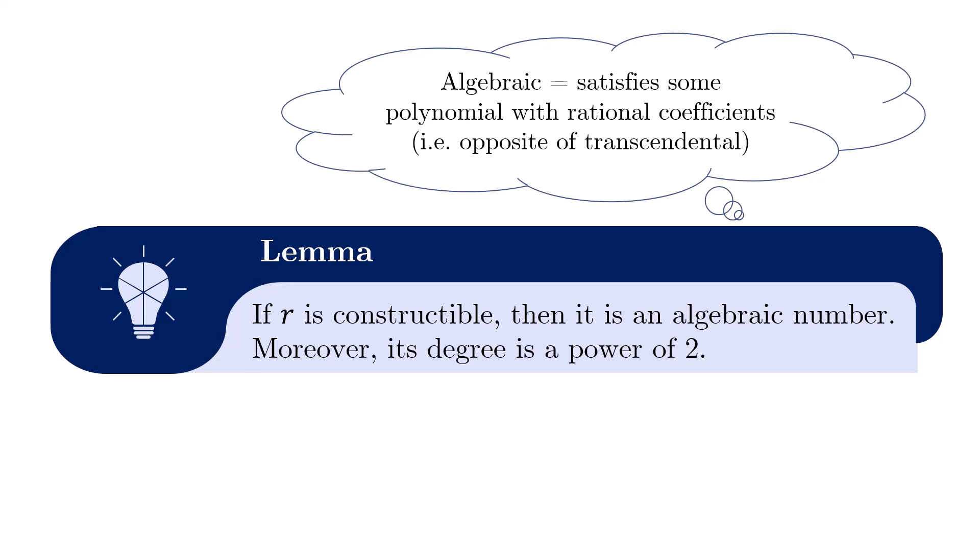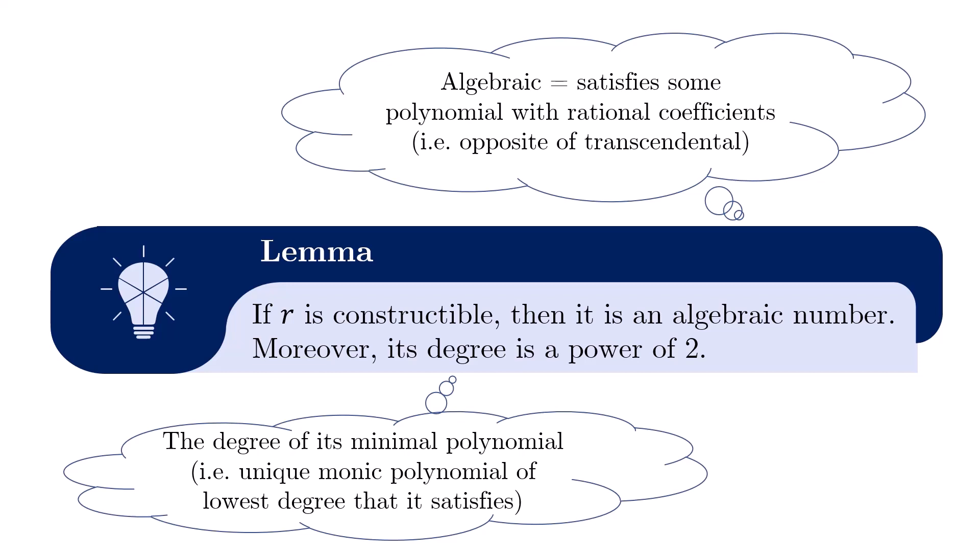Now, if a number is algebraic, then there is a unique monic rational coefficient polynomial of lowest degree which is satisfied. This is known as its minimal polynomial. This polynomial cannot be factorised over the rational numbers, and all other polynomials which the number satisfies have the minimal polynomial as a factor. The degree of the minimal polynomial is known as the degree of the algebraic number itself. Our lemma asserts that this degree must be a power of 2. So we are going to accept this lemma at face value because the proof will require knowledge of field theory and is not feasible to cover in this video.